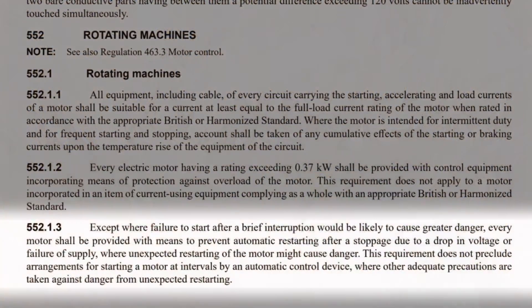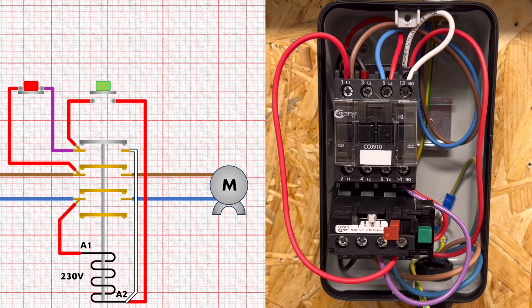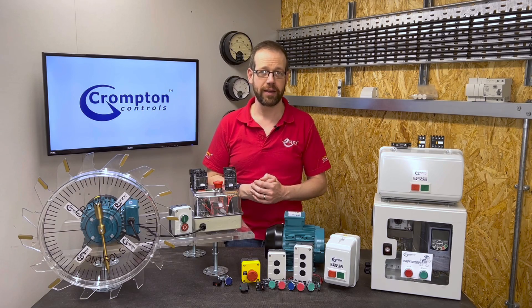At the start of the video we discussed regulation 552.1.3, which basically states that if the power is cut to a motor, it shouldn't be able to restart suddenly when the supply is restored. Looking at the way we've got this direct online starter wired up, pressing the stop button stops the motor and it won't restart until the start button is pressed. But exactly the same thing will happen if we disconnect the external supply to the starter — the coil will drop out, disconnecting the auxiliary contact, and if the external supply is then reconnected it won't restart until we press the start button. This means we've complied with the regulation.